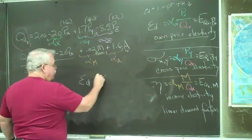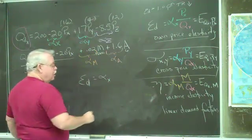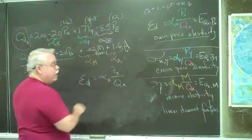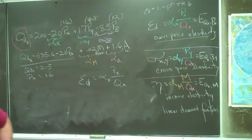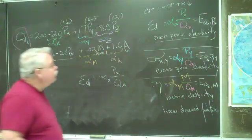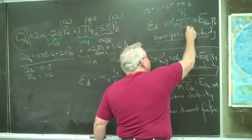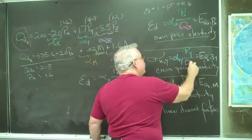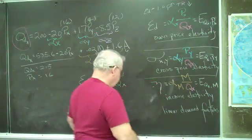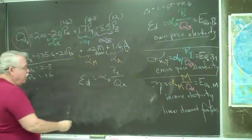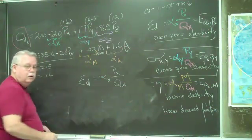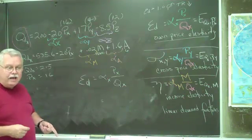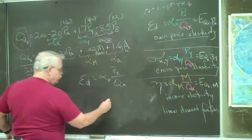The own price elasticity is the coefficient for X times the price of X over the quantity of X. In all of these equations, we use the same numerator in this calculation. Let's put the numbers in. What is alpha X? Negative 20 — be sure to include the sign. Negative 20.